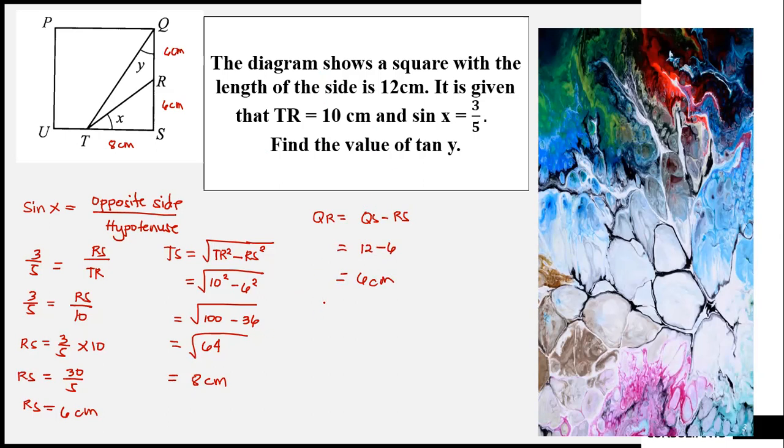Then calculate tan y or tangent y. Tangent y is equal to the opposite side divided by adjacent side. Opposite side is TR. Adjacent side is QR.